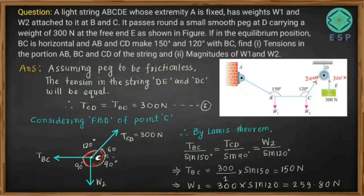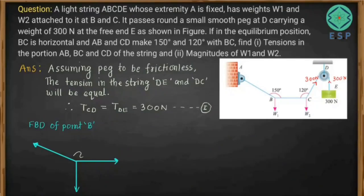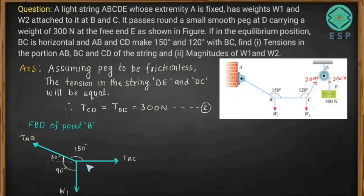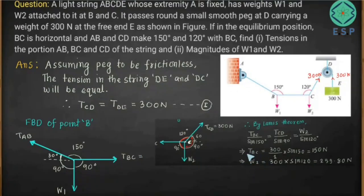Next, drawing the free body diagram of point B: AB makes 150 degrees with BC. Drawing a horizontal reference line, the angle becomes 30 degrees, giving angles of 90 degrees, 90 degrees, and related geometry. Tension in BC is already calculated as 150 newtons.